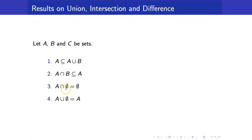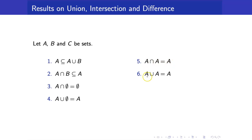If you get the intersection of the null set with any set, the answer will always be the null set. And if you get the union of the null set with any set, the result will just be the set itself. Next, we have the idempotent laws: the intersection of a set with itself is just equal to itself, and the union of a set with itself is still itself. Also, A minus the null set is just equal to A, because you are removing nothing from A. And the empty set minus the elements of A will still be the null set.